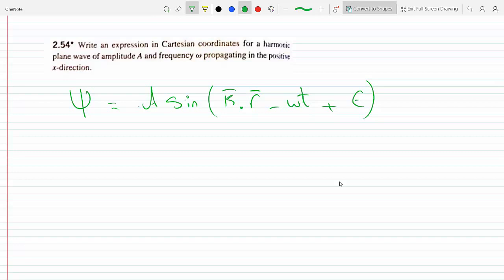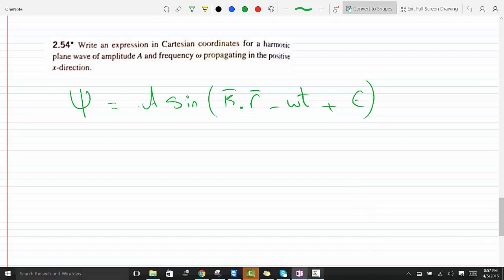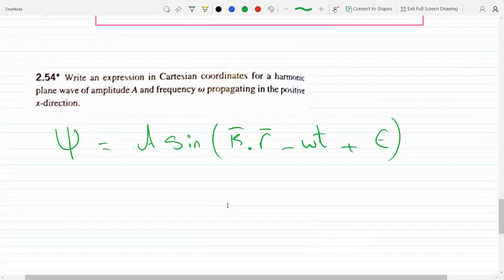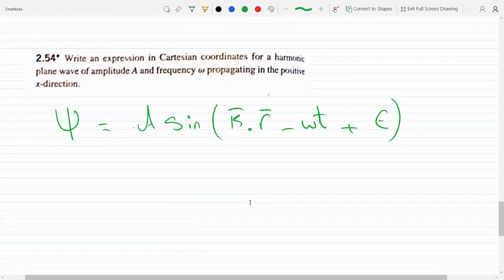And what then... it says it's a harmonic plane wave of amplitude A, so this is the amplitude, and the frequency is omega, propagating in the positive x direction.